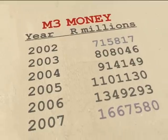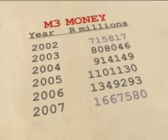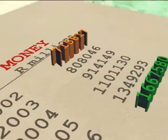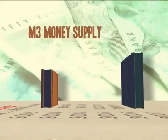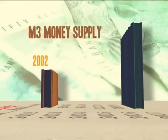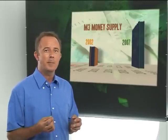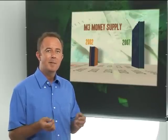We can see that the money supply grows at a pretty fast rate. At the end of 2007, it was more than double what it was in 2002. So how does that come about? Well, that's one of the most fascinating aspects of the money supply.